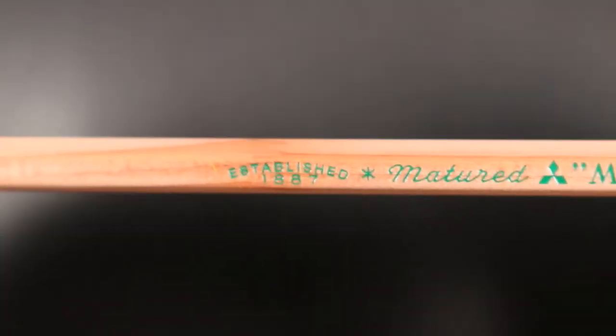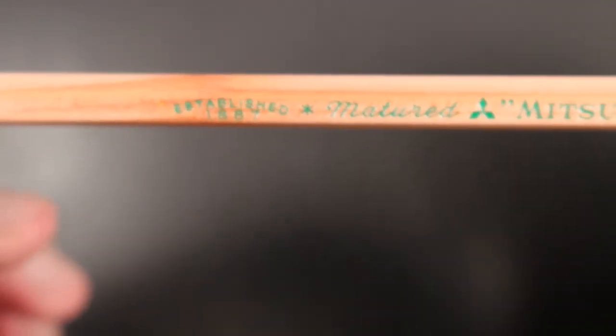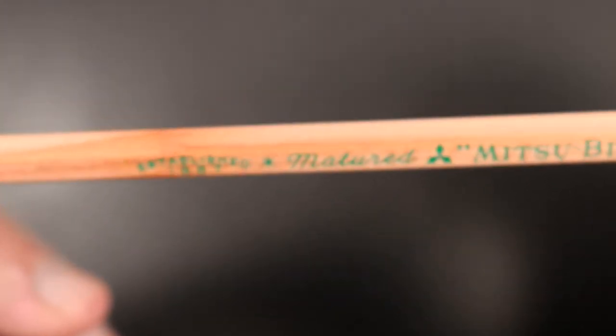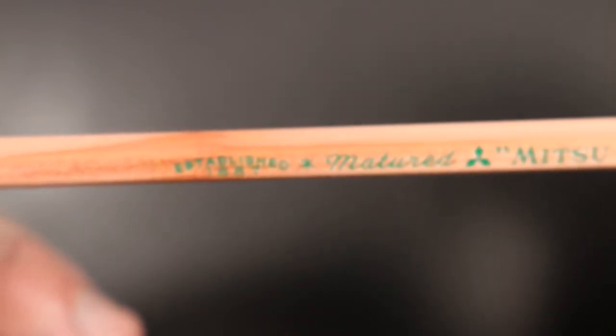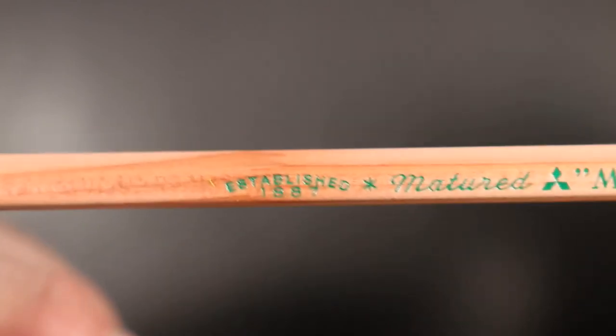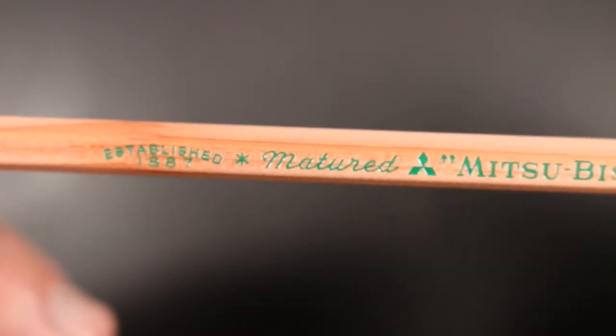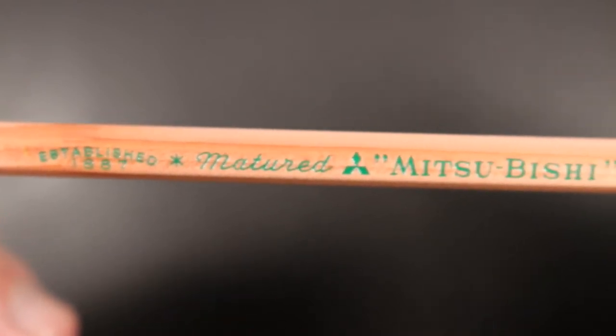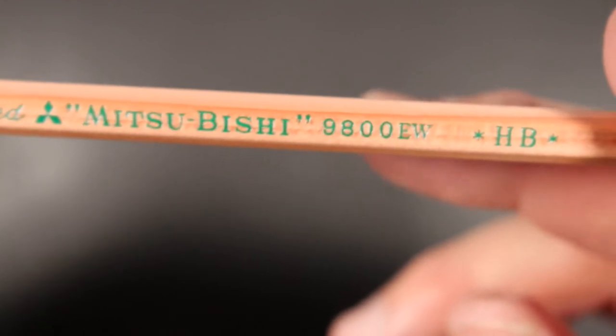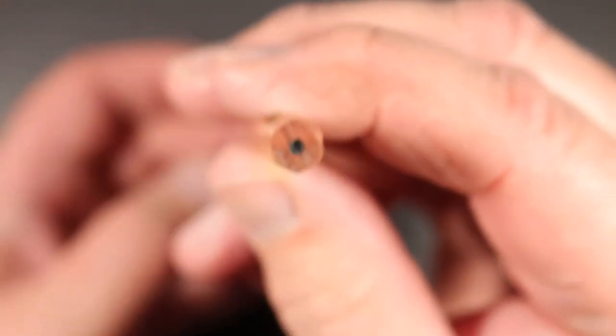Let's get to what it says. So you have a natural finished pencil and there's no lacquer on here, there's no clear coat varnish of any kind, it is just natural wood. Established 1887, then there's a star or an asterisk, matured Mitsubishi 9800 EW HB, that's it.